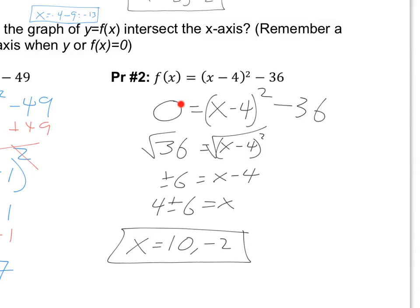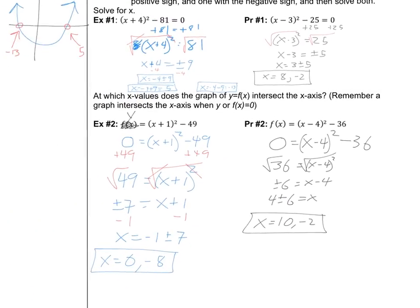Okay. So, I replaced f(x) with 0. I got 0 equals x minus 4 squared minus 36. I added 36 to both sides. Just took the square root of both sides. I got plus or minus 6 equals x minus 4. Added 4 to both sides. I got 4 plus 6, 4 minus 6, which is 4 plus 6 is 10. 4 minus 6 is negative 2. So, there we go. And we're done.